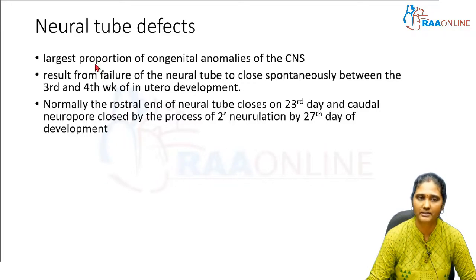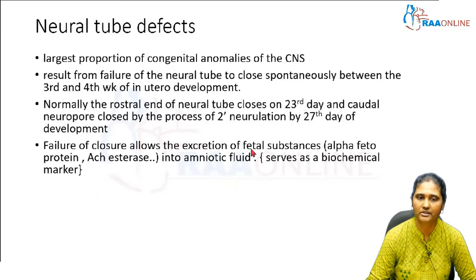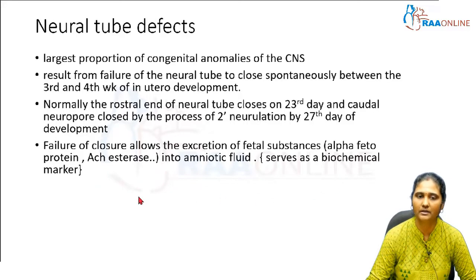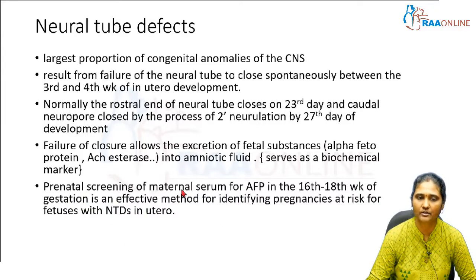In case of a congenital defect, this closure may not happen. Failure of closure allows the excretion of fetal substances — for example, alpha-fetoprotein or acetylcholinesterase — into the amniotic fluid. These serve as biochemical markers to diagnose the underlying neural tube defect. Prenatal screening of maternal serum for alpha-fetoprotein between 16th and 18th week of gestation is an effective method for identifying pregnancies at risk.